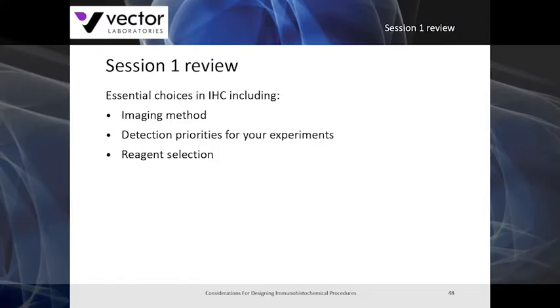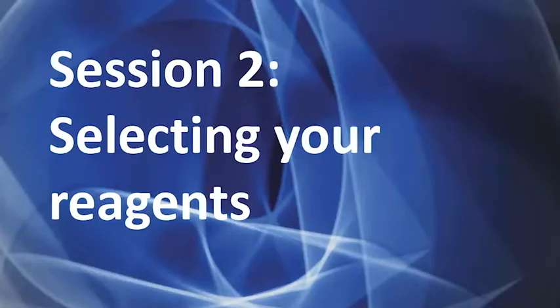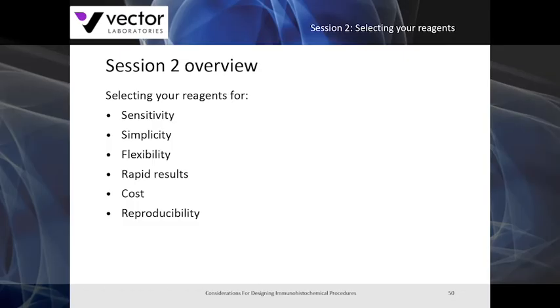In the last section, we discussed essential choices in immunohistochemistry, which included your imaging method, detection priorities, and reagent selection. In this section, we're going to select reagents for priorities you have in your laboratory, which can include sensitivity, simplicity, flexibility, rapid results, cost, and reproducibility.